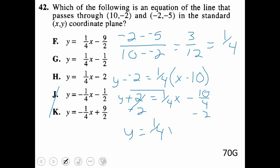So that's going to get us y equals 1 fourth x. And again, if we take that negative 10 over 4 and subtract 2 from it, you're going to get a value of negative 9 over 2. And that makes that answer choice F.